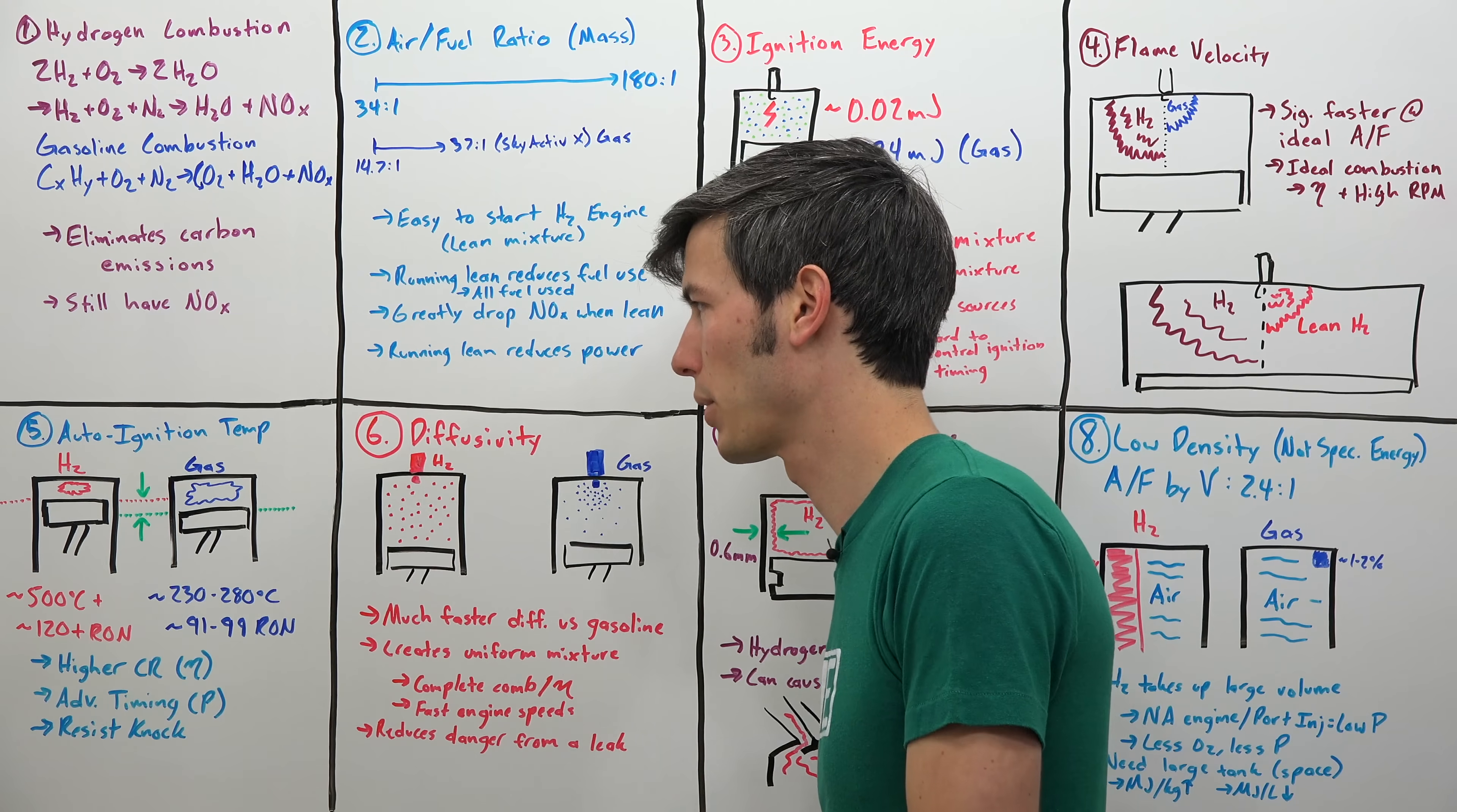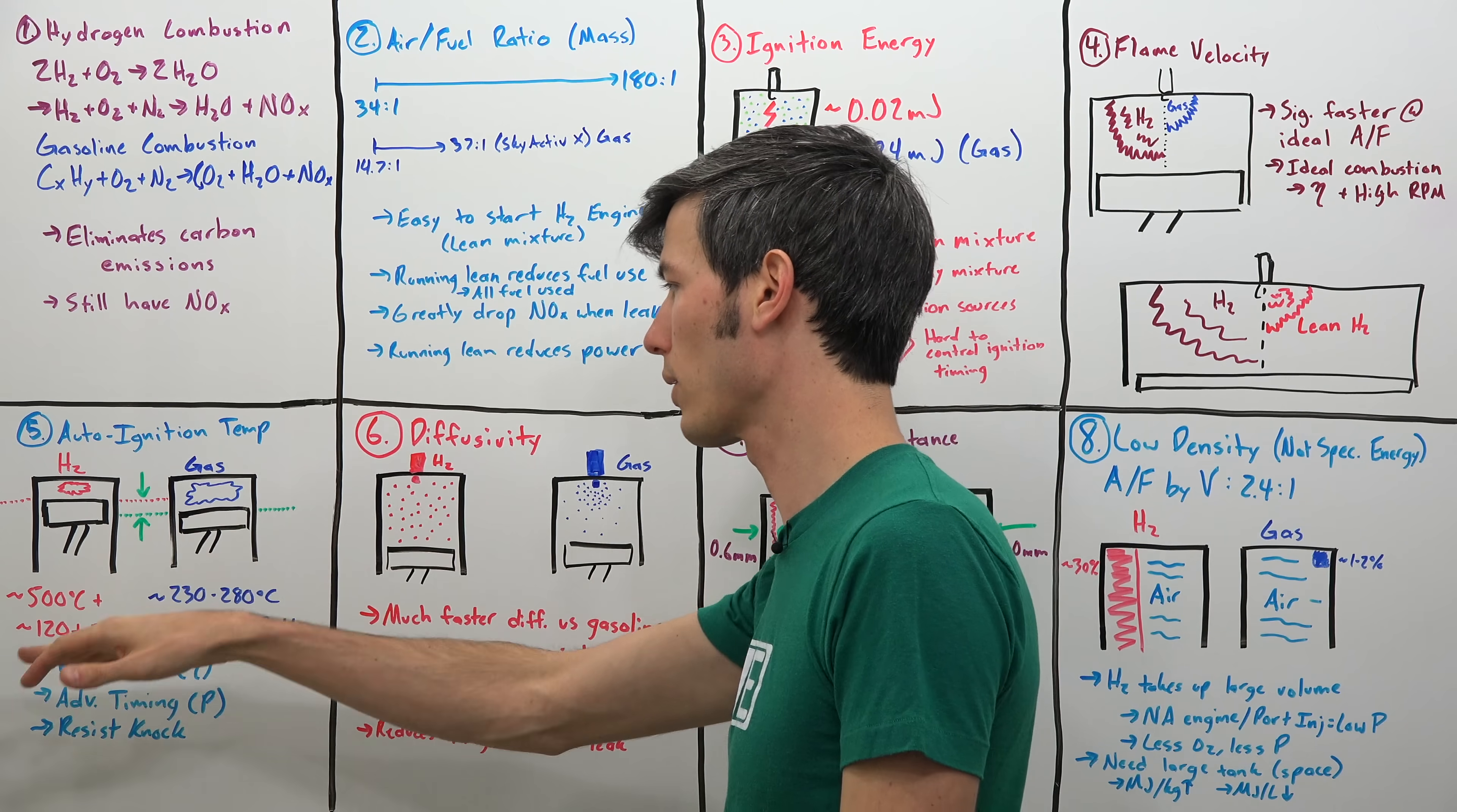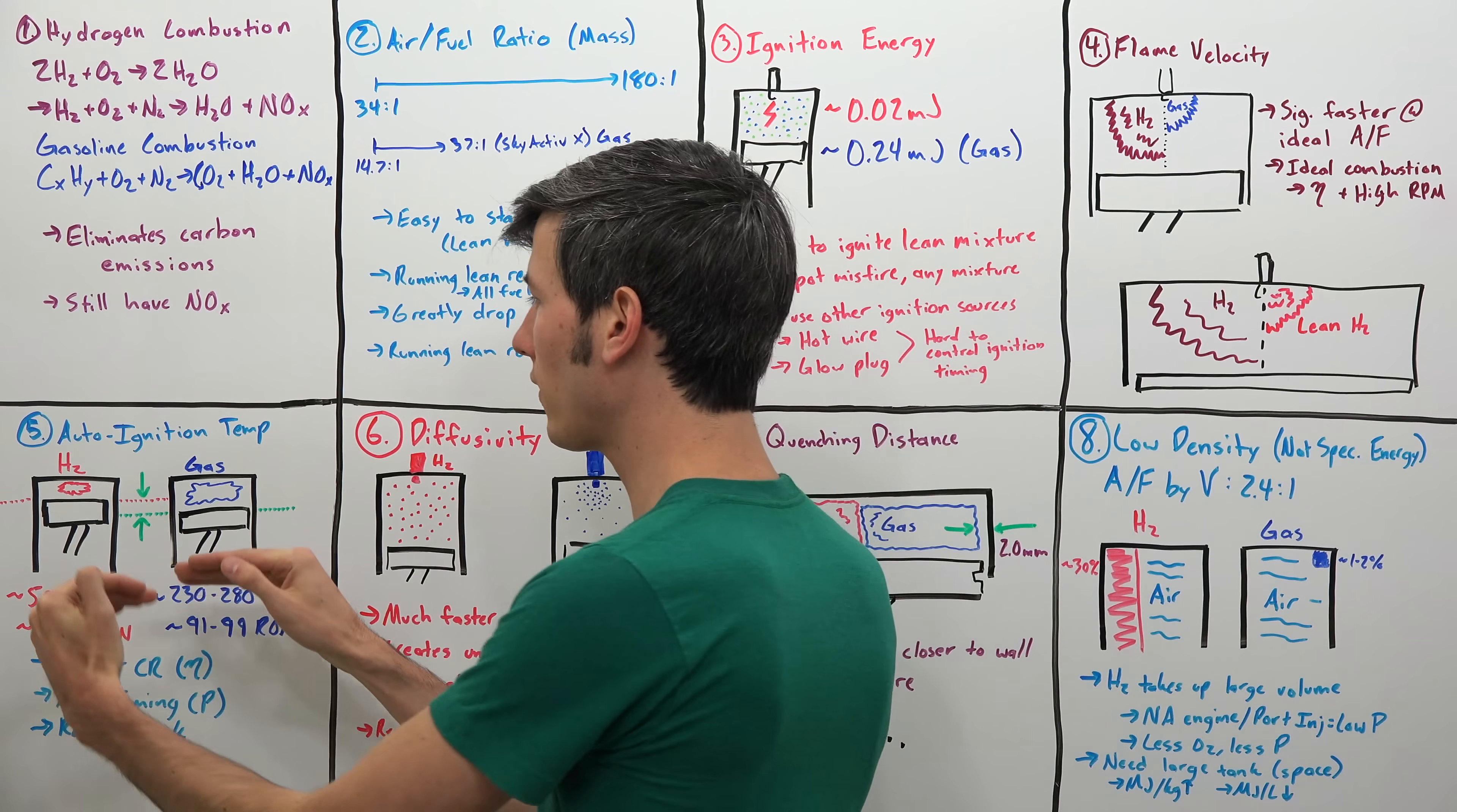Next, let's get into the auto ignition temperature and here hydrogen has an advantage over gasoline as well. So you can think of the auto ignition temperature as the temperature at which if you had that perfect air fuel mixture, if you bring that mixture to this temperature, it will automatically combust. You don't need a spark or anything like that. Just the heat alone will force it to combust. And so by having a higher auto ignition temperature for hydrogen and air, it's going to be about 500 degrees Celsius for gasoline and air. It's going to be about 230 to 280 degrees Celsius. So quite a bit higher. You can think of that as an octane number, a hydrogen's fuel's octane number is going to be over 120 versus in the 91 to 99 ish region for a gasoline fuel.